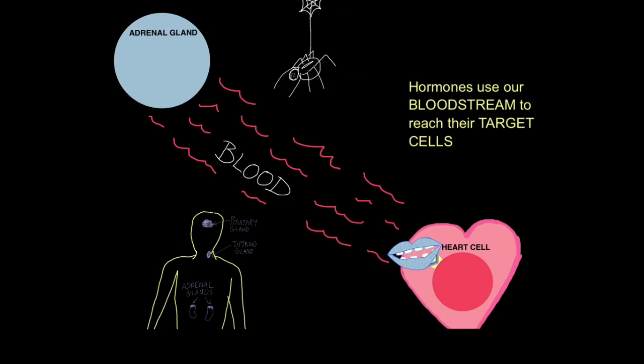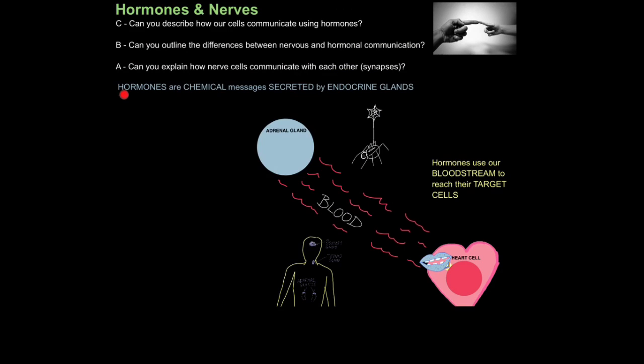So hormones use our bloodstream to reach their target cells. So if you can say that hormones are chemical messages secreted by endocrine glands, which then travel in the bloodstream to reach their target cells, you've achieved aim 1. Because that is how you describe how our cells communicate using hormones.